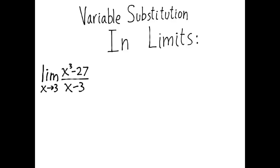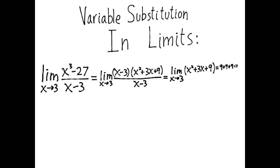For example, if we had the limit as x approaches 3 of x cubed minus 27 over x minus 3, we could do it simply by factoring x minus 3 and then canceling the factors of x minus 3, and then substituting in 3 and the answer turns out to be 27.